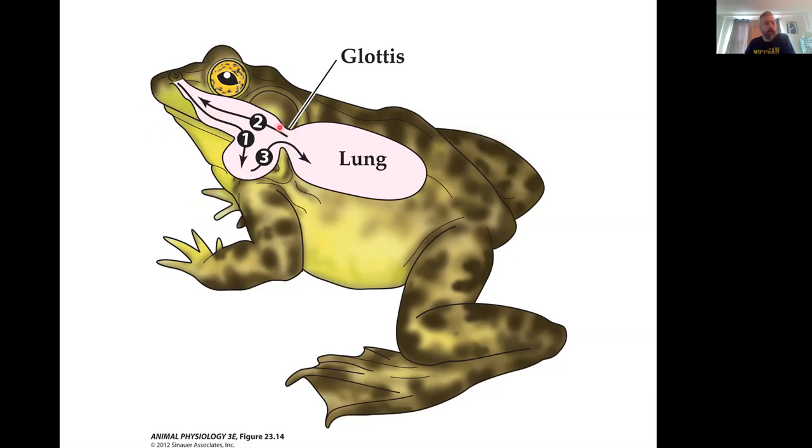Then they're going to open the glottis and the lung, which is elastic, is going to rebound like a rubber band. Right? And that's going to push air out the glottis and out the mouth and out the nostril. Now this stale air and this fresh air are separated a little bit. Fresh air is mostly down here and the stale air is mostly up here, but they do mix. There's a little bit of mixing going on.